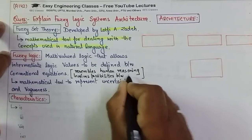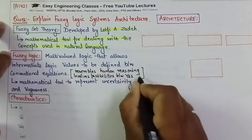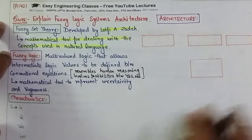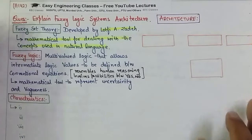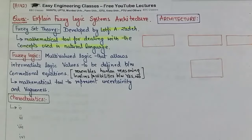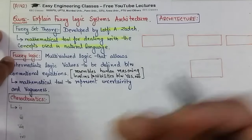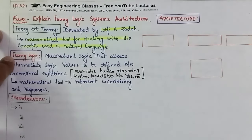It involves possibilities between yes and no. The possibilities can be possibly yes, certainly yes, cannot say, and so on.